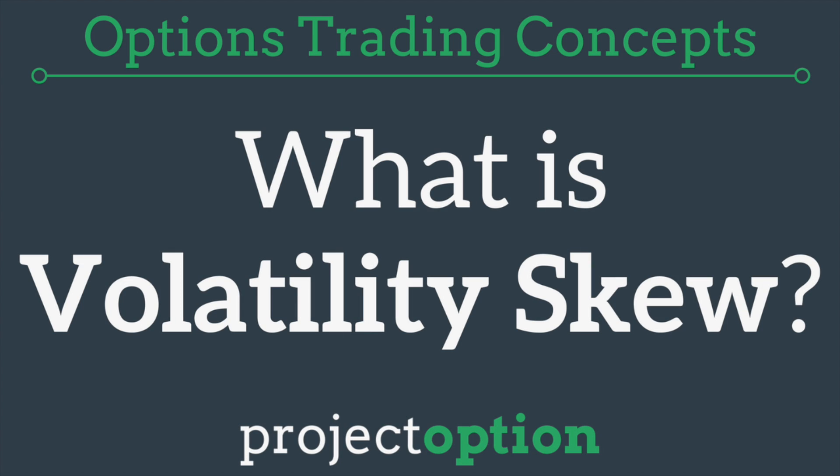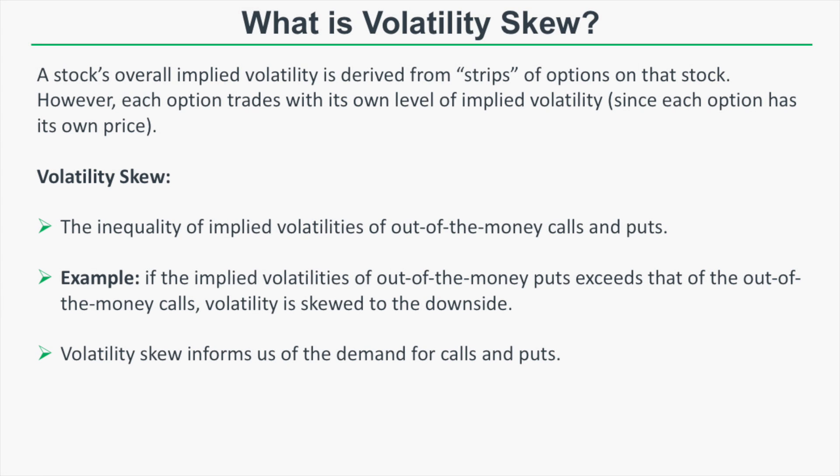Hey everybody, this is Chris from Project Option. In today's video I want to talk about volatility skew. If you're familiar with implied volatility, you'll know that implied volatility is represented as one number, based on the aggregation of a bunch of different options on a particular stock. However, individual options trade with their own levels of implied volatility because they all have their own unique prices.